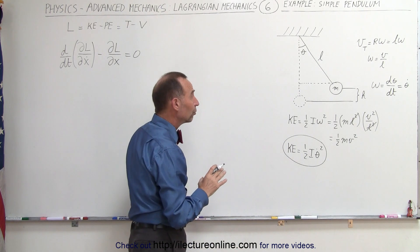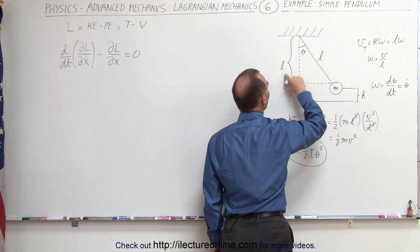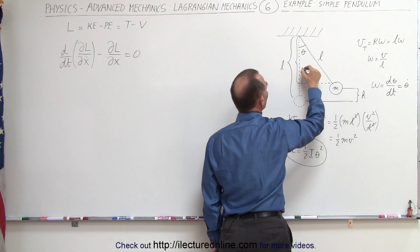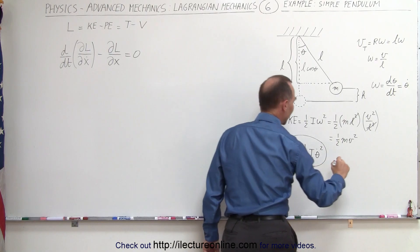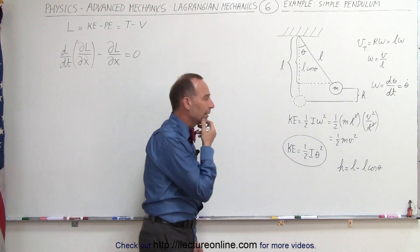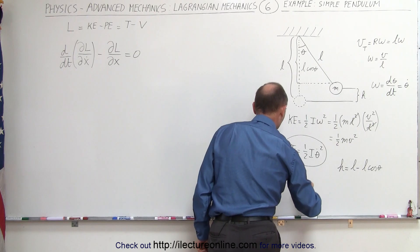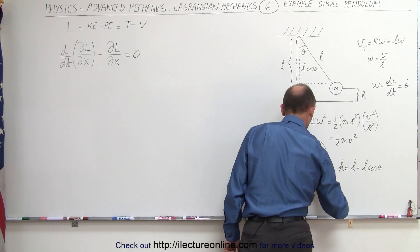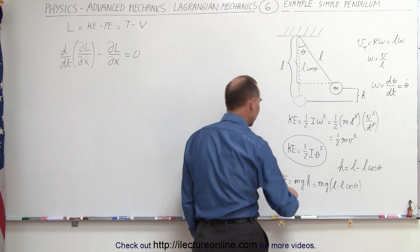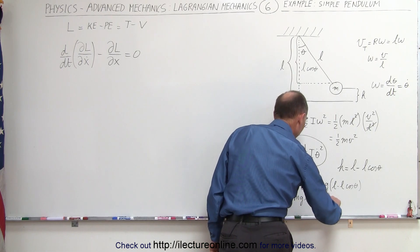Now I'll find the potential energy in terms of theta as well. The full length of the pendulum is L, and the height H equals L minus the vertical projection, where the projection is L times cosine of theta. Therefore, H equals L minus L times cosine of theta. Since we have height in terms of theta, the potential energy is PE = MGH = MG times L minus L cosine theta.